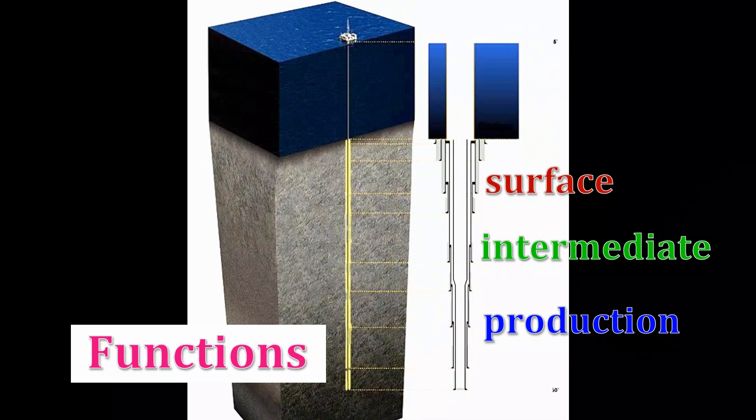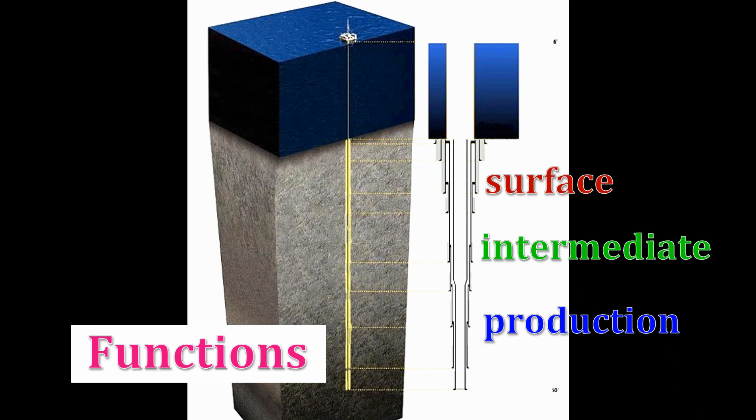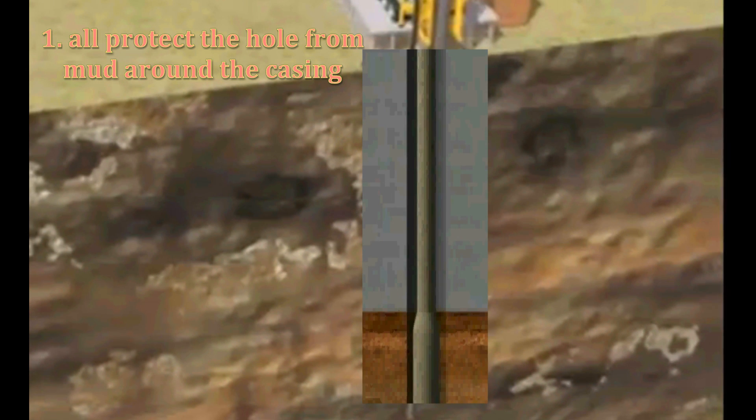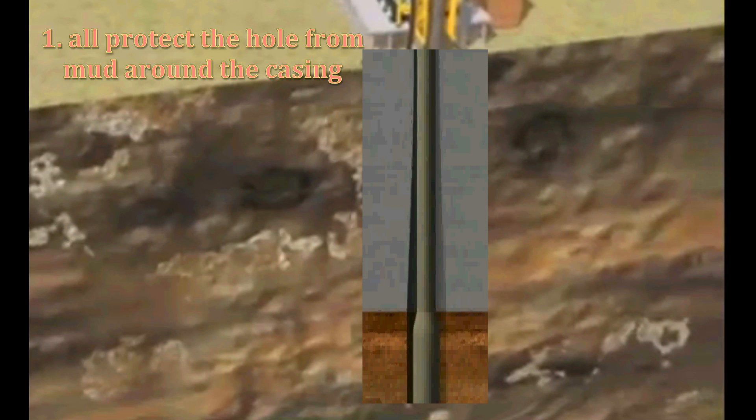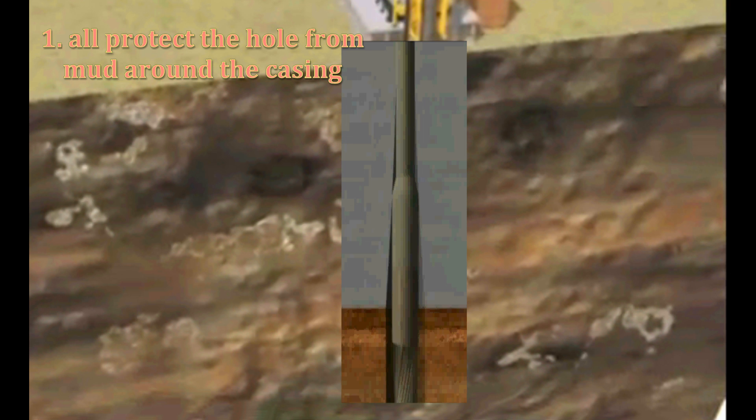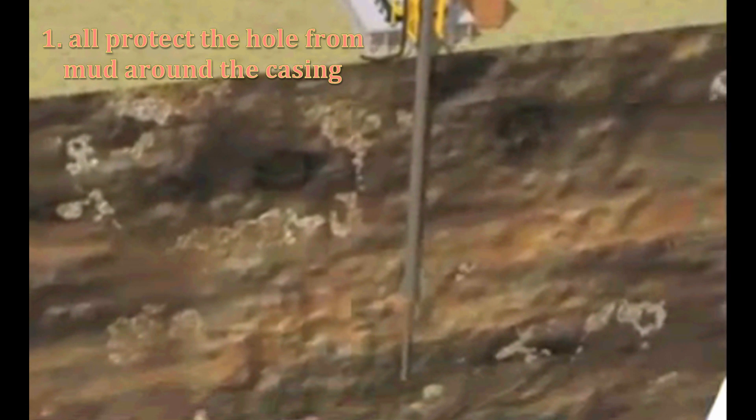Let's start with the four main functions of the surface, intermediate, and production casing strings with their cement sheaths or covers. First, all three of the different types of casing protect the hole from the mud, thus preventing softer formations of shale from drawing water out of the mud, which then can cause the shale to swell and block or impede the drilling operations. In addition, casing prevents loose surface sediments and other unconsolidated formations from being eroded by the mud system.